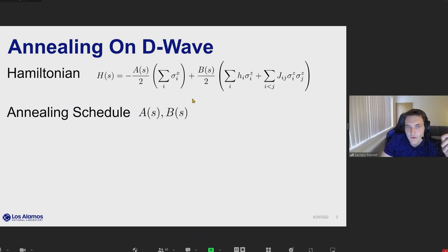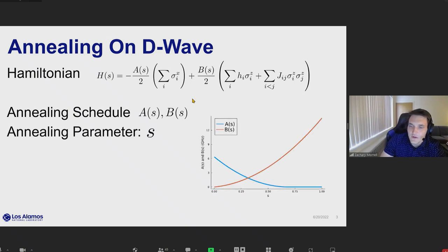These are controlled by your annealing schedule functions, which in the case of the LANL D-Wave machine looks something like this. We also have this annealing parameter s, which effectively gives you the percentage of the anneal which you've completed. And lastly, we also need to consider the total annealing time of the system in our simulations.